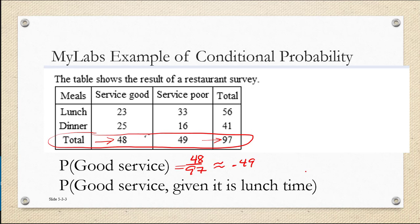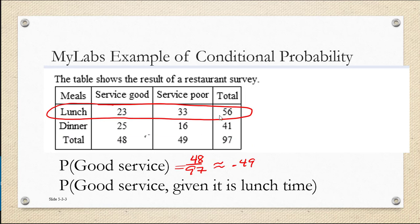Now let's think about what's the probability of good service given that we know it's lunchtime. If it's lunchtime, then we only have 56 observations to go out of, and out of those 56, service was good 23 times. So the probability of good service given that it's lunchtime is 23 over 56, or approximately 0.41. Notice that the probability is different depending on if we have this extra piece of information or extra condition.